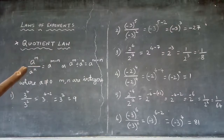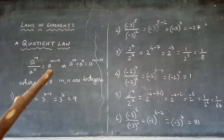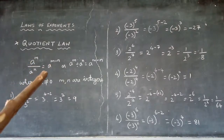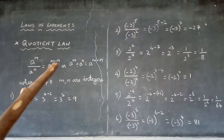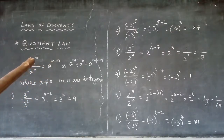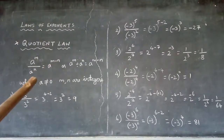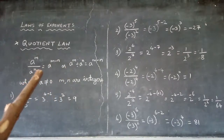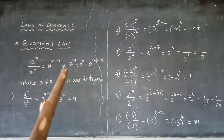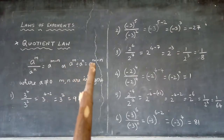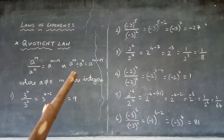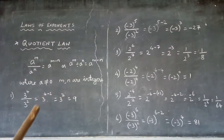Quotient law states that when we divide powers with the same base, we can subtract the exponents. So a^m divided by a^n means we write the base a and subtract the exponents: numerator exponent first, then minus the denominator exponent. So it equals a^(m-n). Whether you use a division line or a division symbol, the result is a^(m-n) — we subtract the exponents.